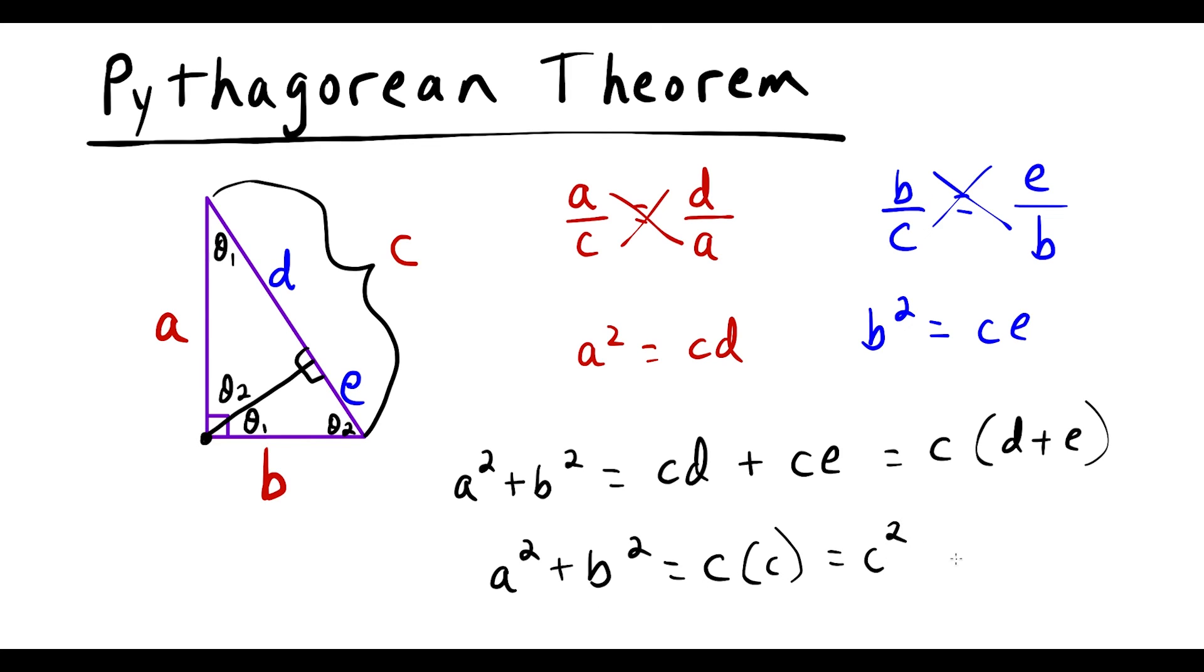So this tells us, this proves our formula. This tells us that a squared plus b squared is equal to c squared. And this concludes our proof of Pythagorean theorem.